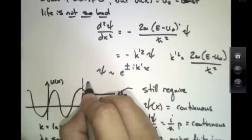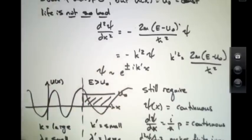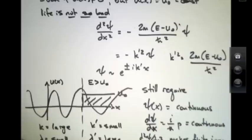This is the case when E is greater than u naught. So, we can still solve for potentials like this, as long as it's a potential that's constant, and the energy is greater than that constant.